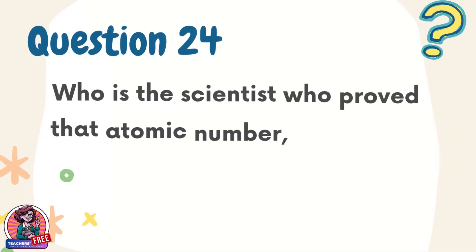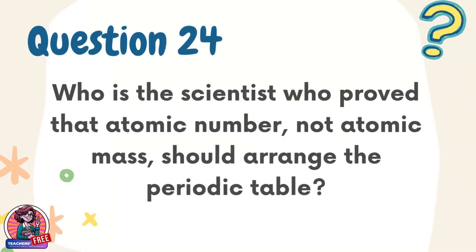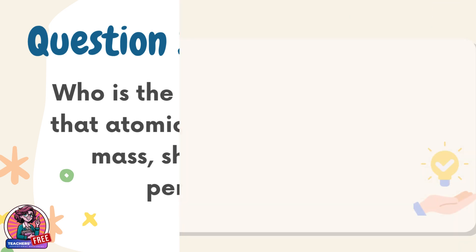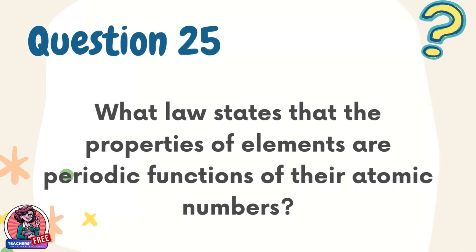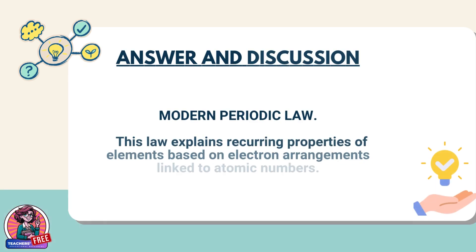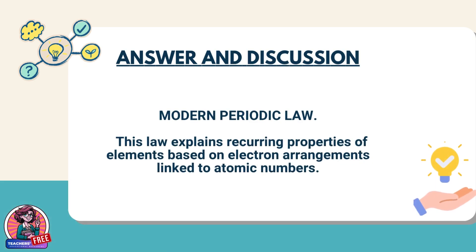Question 24. Who is the scientist who proved that atomic number, not atomic mass, should arrange the periodic table? Answer: Henry Moseley. He used X-ray experiments to show that the atomic number defines an element's properties. Question 25. What law states that the properties of elements are periodic functions of their atomic numbers? Answer: Modern periodic law. This law explains recurring properties of elements based on electron arrangements linked to atomic numbers.